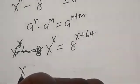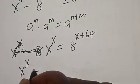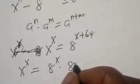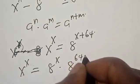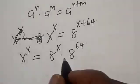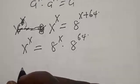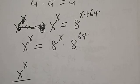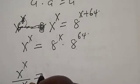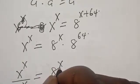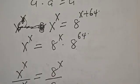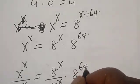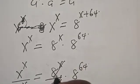We have s raised to the power s equal to 8 raised to the power s multiplied by 8 raised to the power 64, using the exponent product rule. Now let's divide both sides by 8 raised to the power s. We have s raised to the power s divided by 8 raised to the power s, equal to 8 raised to the power s divided by 8 raised to the power s, multiplied by 8 raised to the power 64. The 8^s terms cancel.